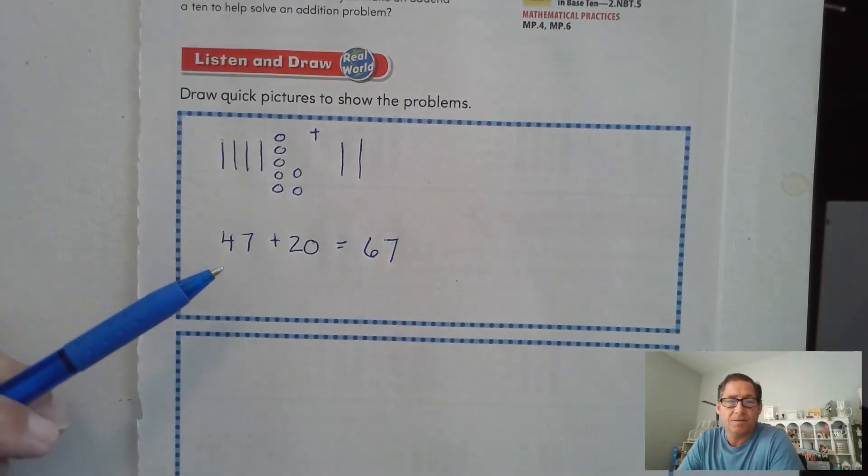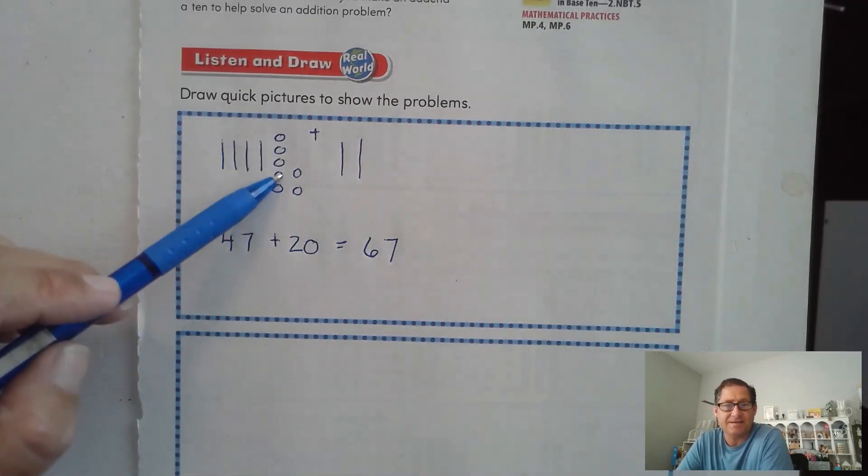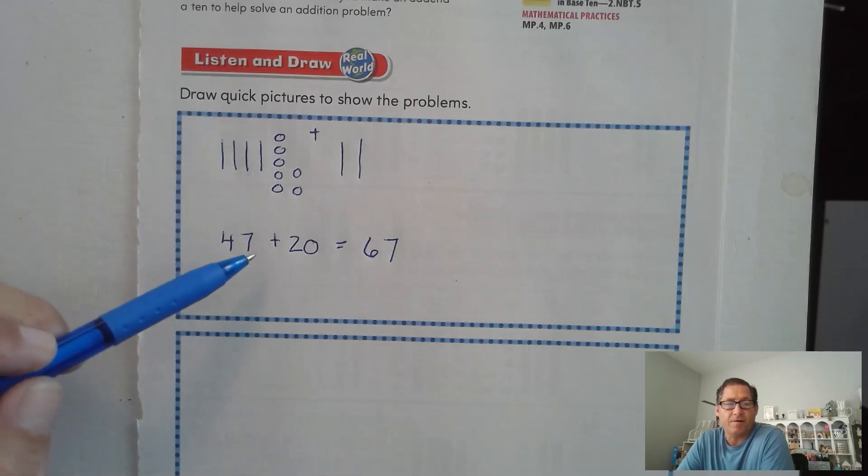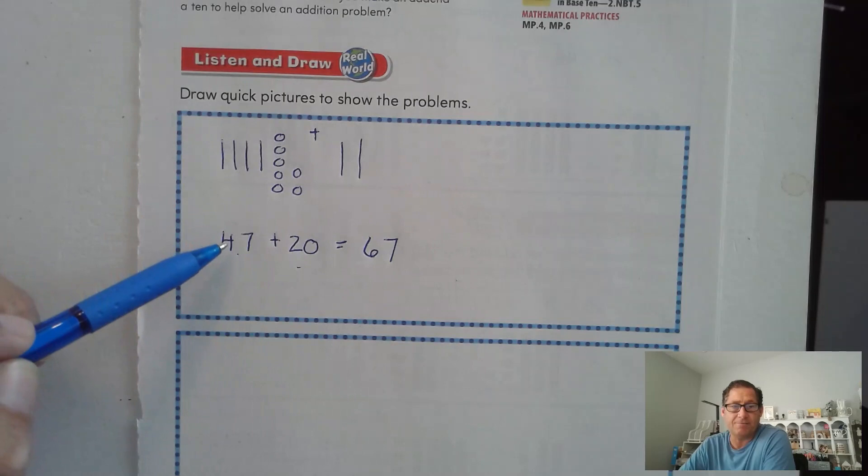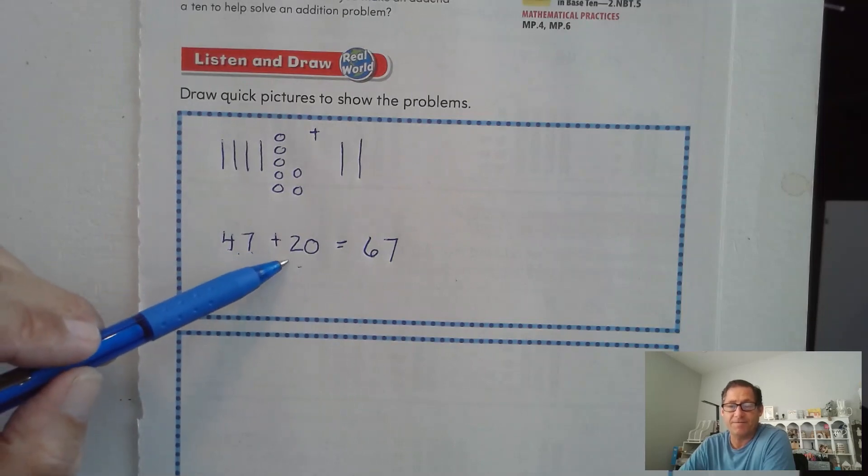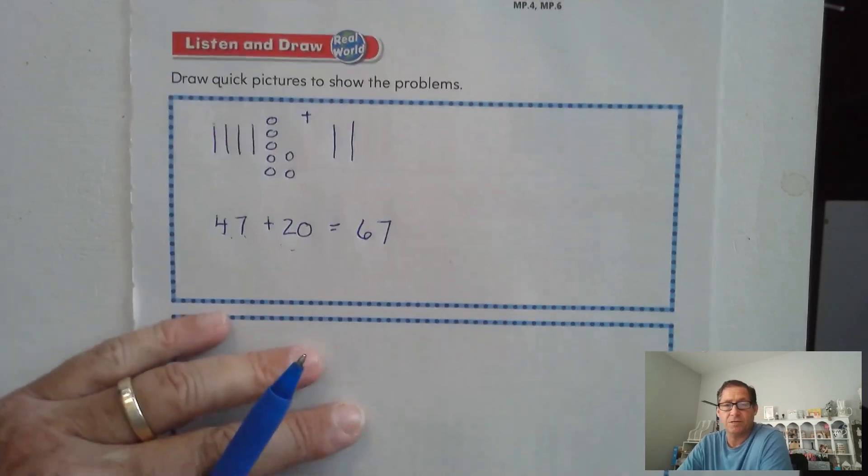You could have just added the 10s. I have six 10s and seven ones. You could have gone 47 and counted 10s forward. We have two 10s here, right? So 47, 57, 67. So there's a couple possibilities.